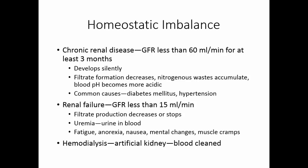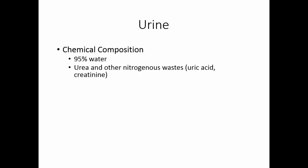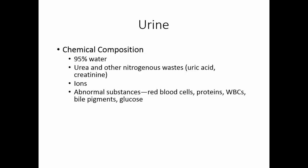These people need hemodialysis, which uses an artificial kidney outside the body to clean the blood. The chemical composition of urine is 95% water. There are, of course, urea and other nitrogenous wastes like uric acid and creatinine in it — that's the purpose of making urine. We will have ions in the urine to varying degrees depending upon your intake.